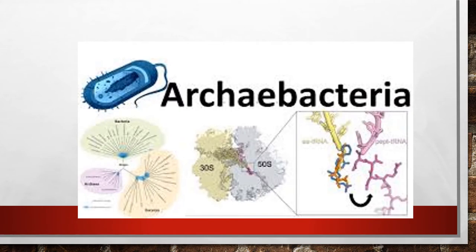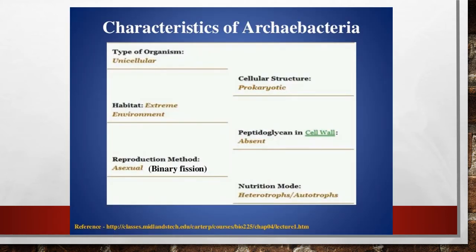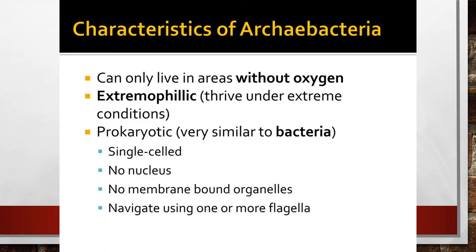Archibacteria is the first type of bacteria present under the category of Kingdom Monera. The characteristic features are: the organisms are unicellular in nature and prokaryotes. Their habitat is an extreme environment where other organisms cannot survive. The peptidoglycan layer in the cell wall is absent. The mode of reproduction is asexual through binary fission, and the nutritional mode is heterotrophic or autotrophic.